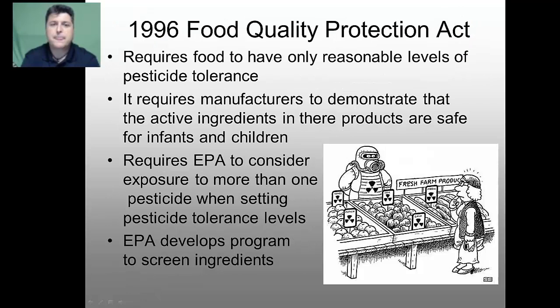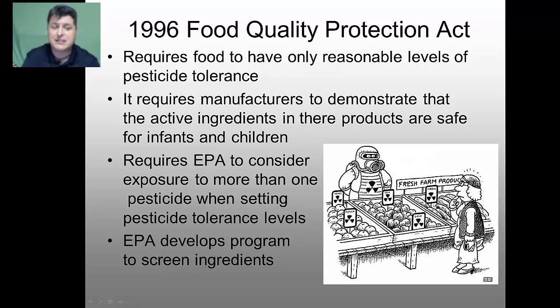Another major law is the 1996 Food Quality Protection Act. This requires that food only have a reasonable amount of pesticide on it, and requires manufacturers to demonstrate that any active ingredients in their products are safe for infants and children. It requires the EPA to consider exposure to more than one pesticide when setting tolerance levels, because of the concept of synergy — two or more pesticides working together can have an increased impact on health. Finally, the EPA is responsible under this act to develop programs to screen ingredients for their level of safety.